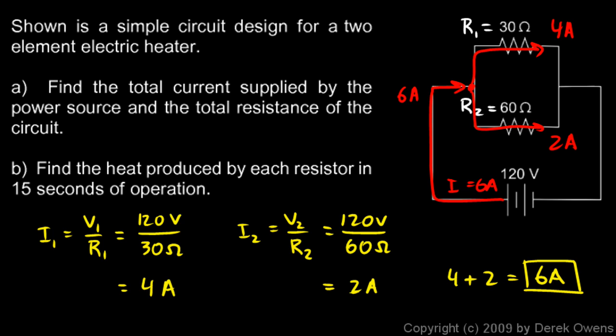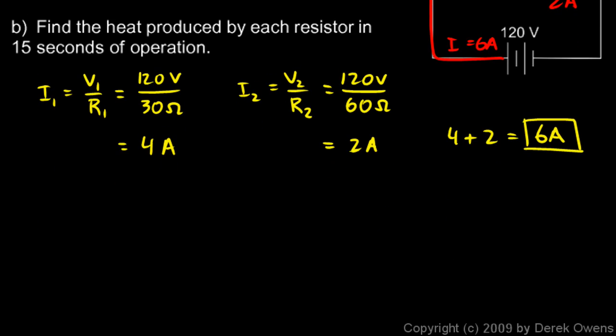Then we're told to find the total resistance of the circuit. Well, we can just use Ohm's law to find the total resistance. If I remember Ohm's law it's V equals IR, so we can just do the algebra to solve that for R.